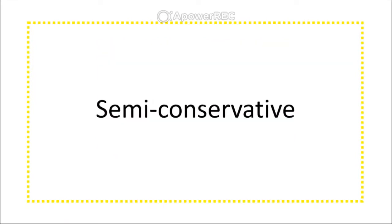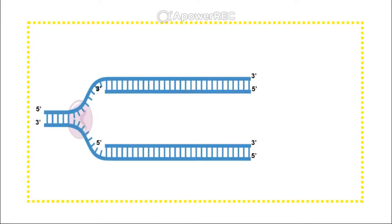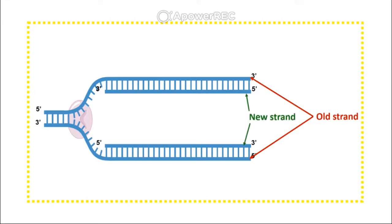Semi-conservative replication is a process that occurs in cells where both old strands from a previous DNA molecule are used as templates and retained in the two new DNA molecules that form. The DNA polymerases synthesize one new strand per new double helix that is formed.